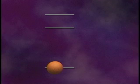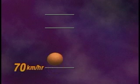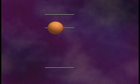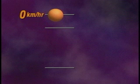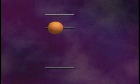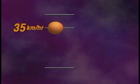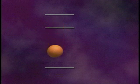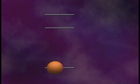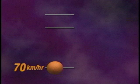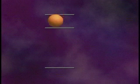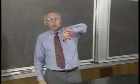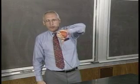If we throw the ball and it leaves our hand going up at 70 kilometers per hour, then after one second it would be going 35 kilometers per hour. After the second second it would reach the top. After the third second it would be coming down at 35 kilometers per hour, and after the fourth second it would be back to 70 kilometers per hour — the speed with which it had left our hand. Going up or going down, there's just one significant force: gravity.